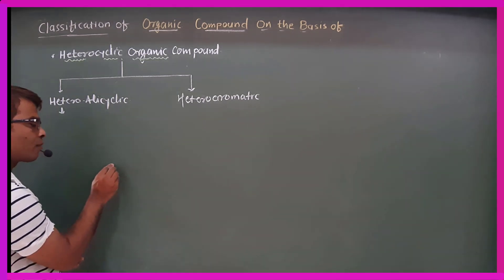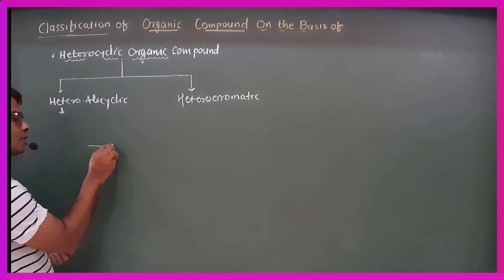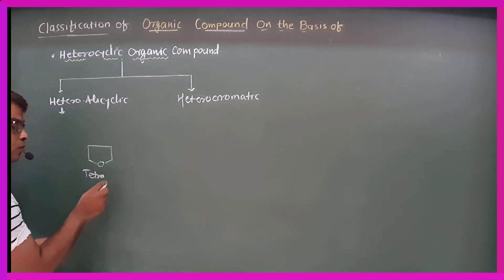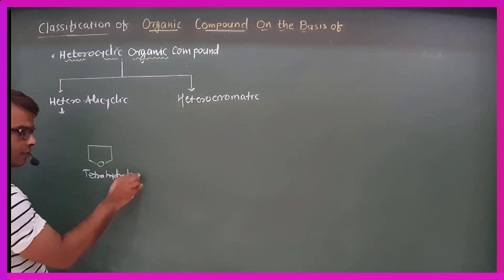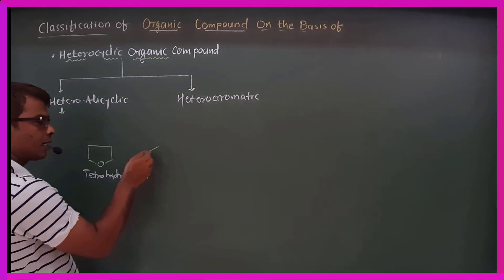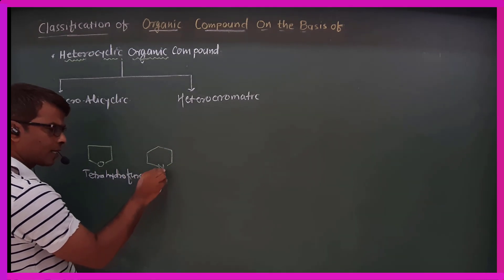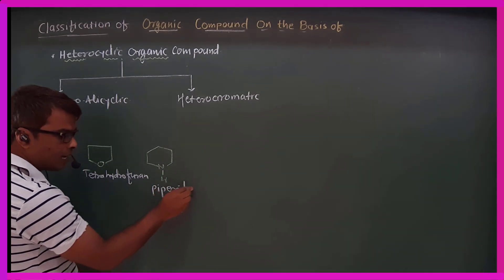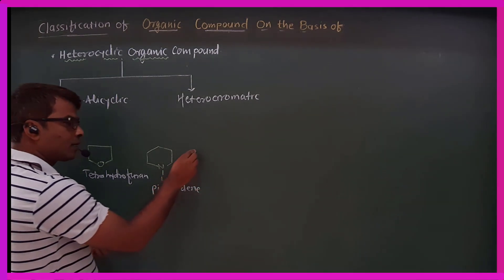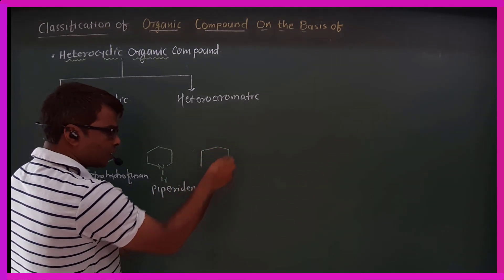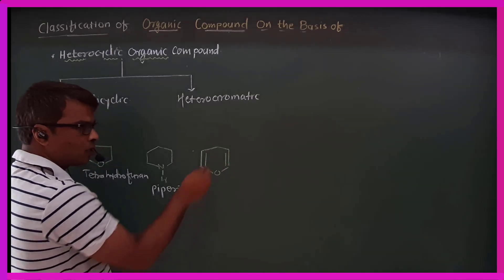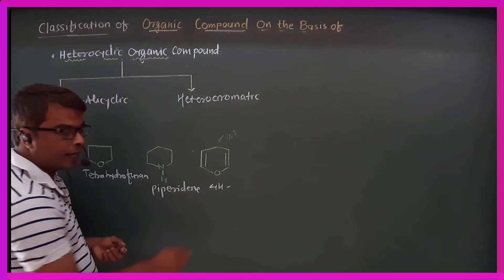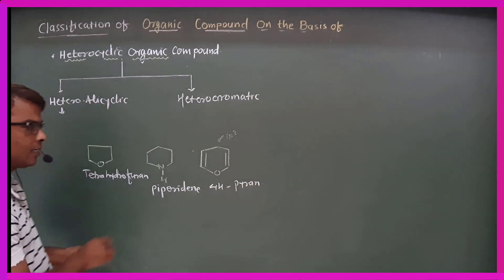Heterocyclic organic compounds include 5-membered rings containing oxygen. For example, tetrahydrofuran is a 5-membered oxygen-containing ring. When we consider a 6-membered ring, the compound is called 4H-Pyrane, which is also a heterocyclic compound.